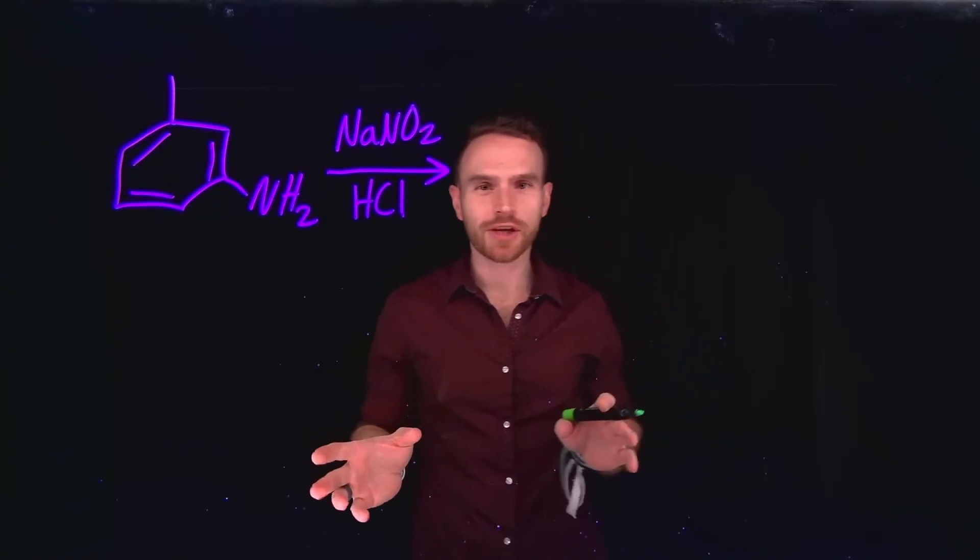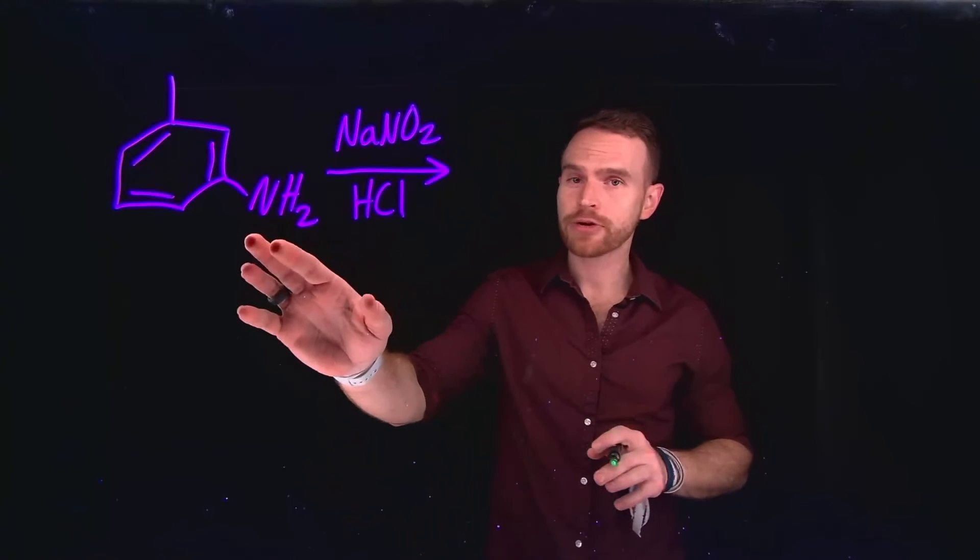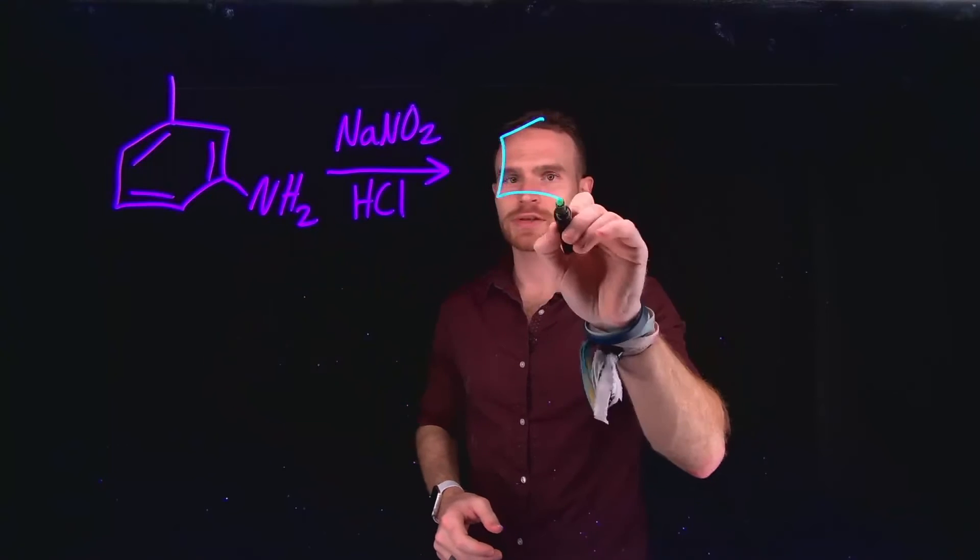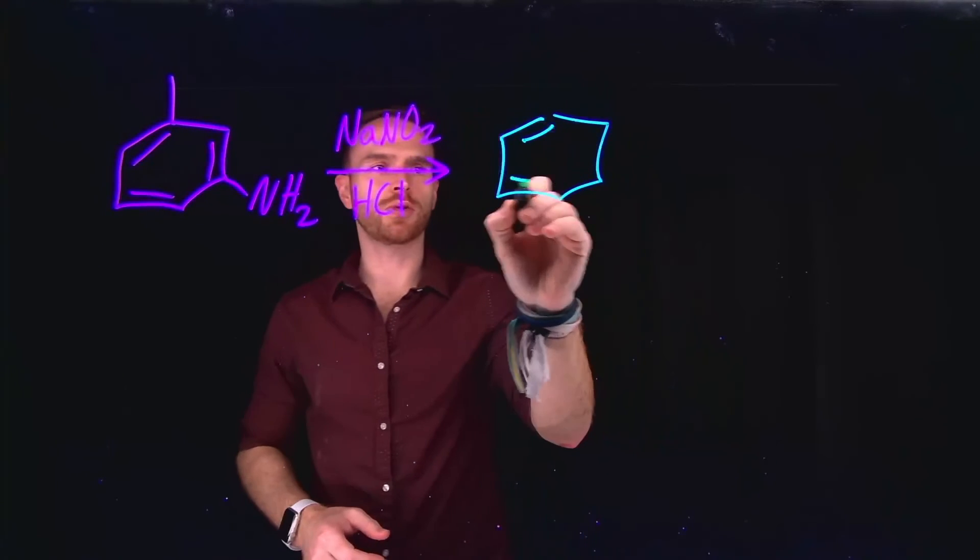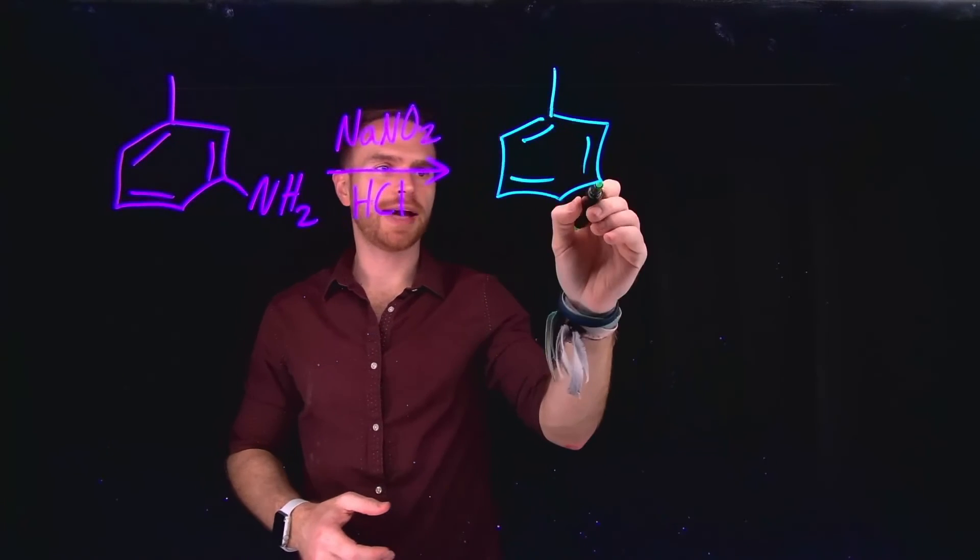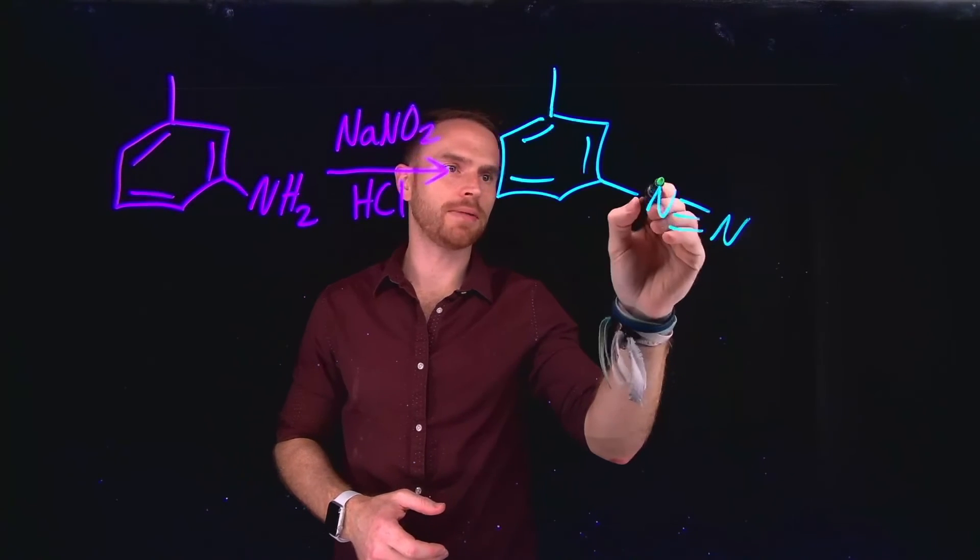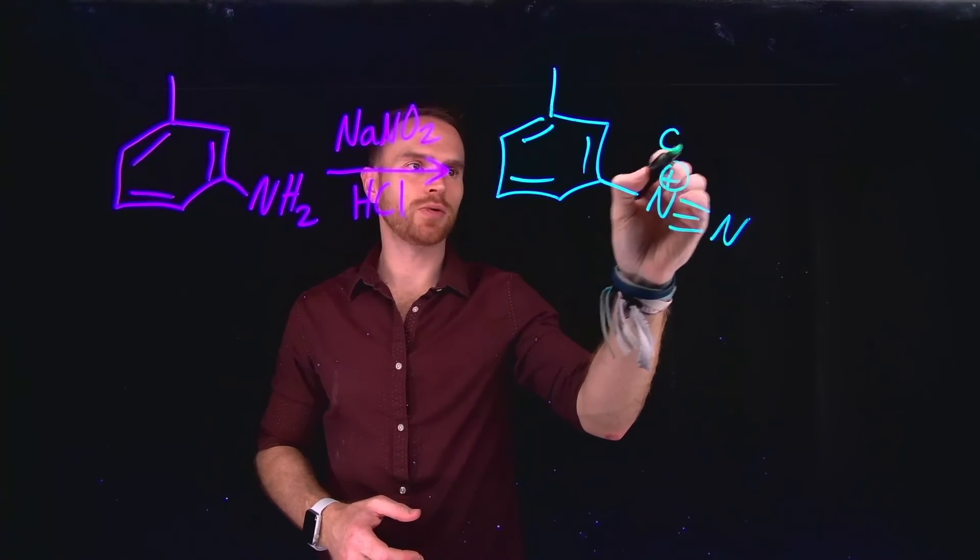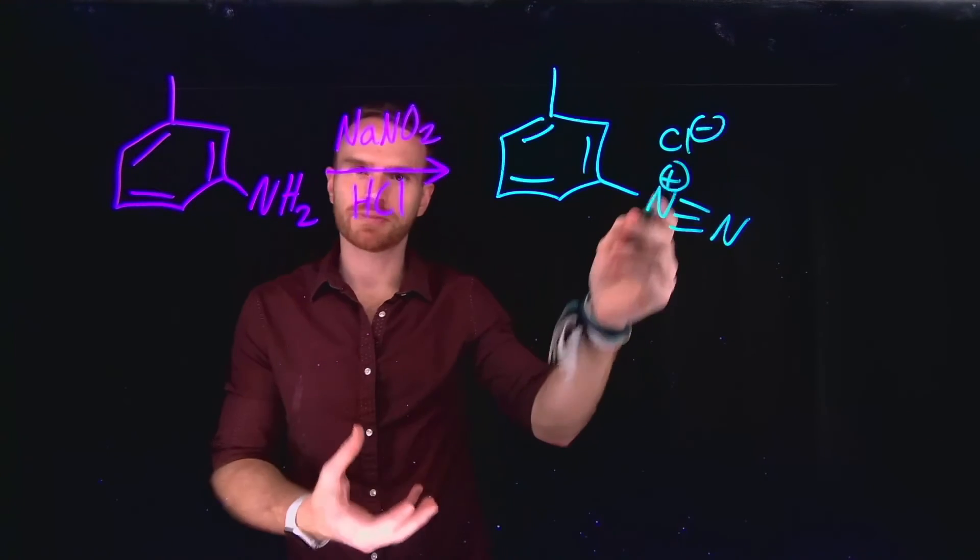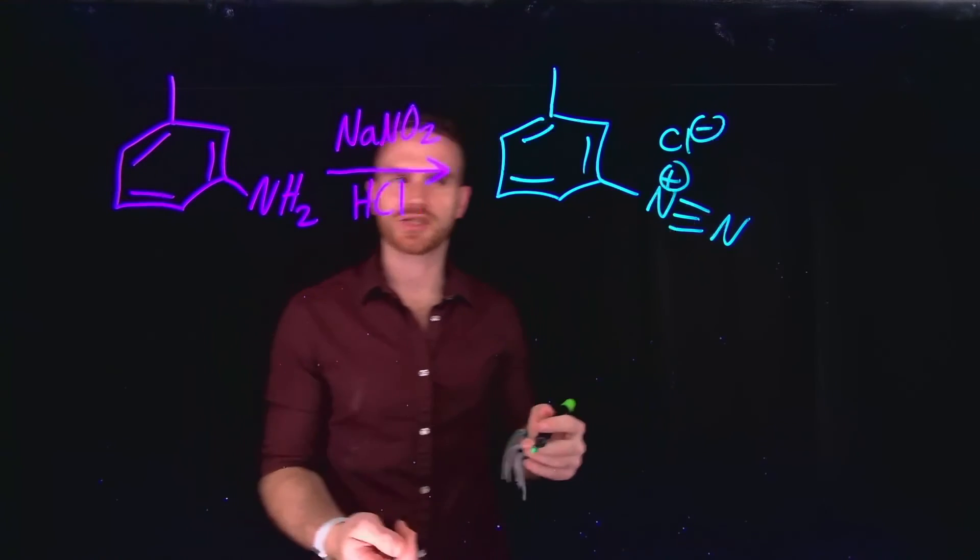The first reaction is what this video is all about, and that's turning primary amines into diazonium salts. I know that in the presence of sodium nitrite and a strong acid that we can successfully convert a primary amine into a diazonium salt. And it's a diazonium salt because we have now that chloride ion there making this a salt.